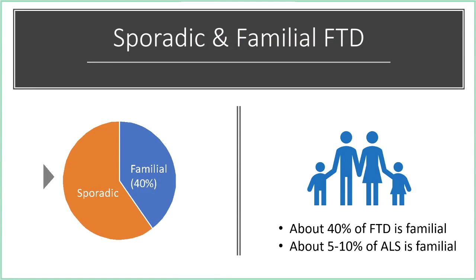In ALS, it's a little bit different — the numbers are much higher for sporadic. About 90 to 95% of ALS happens in just one person in a family, but about 5 to 10% of ALS is familial, meaning it affects multiple family members.